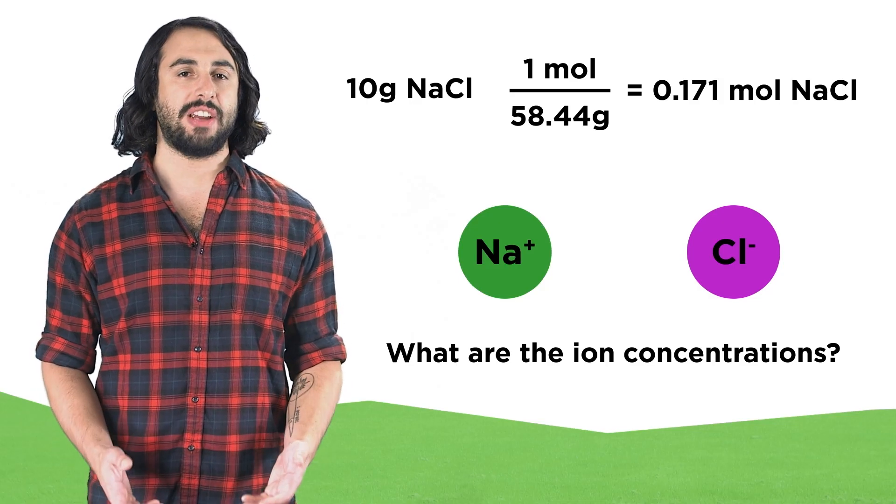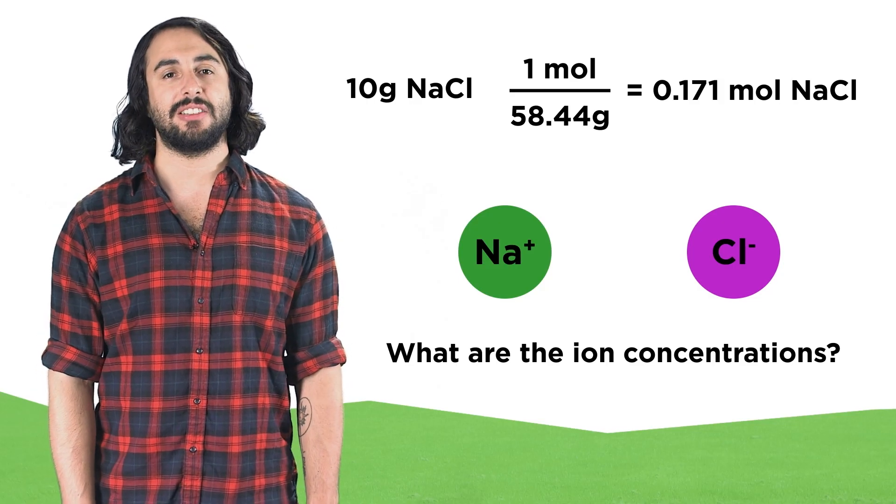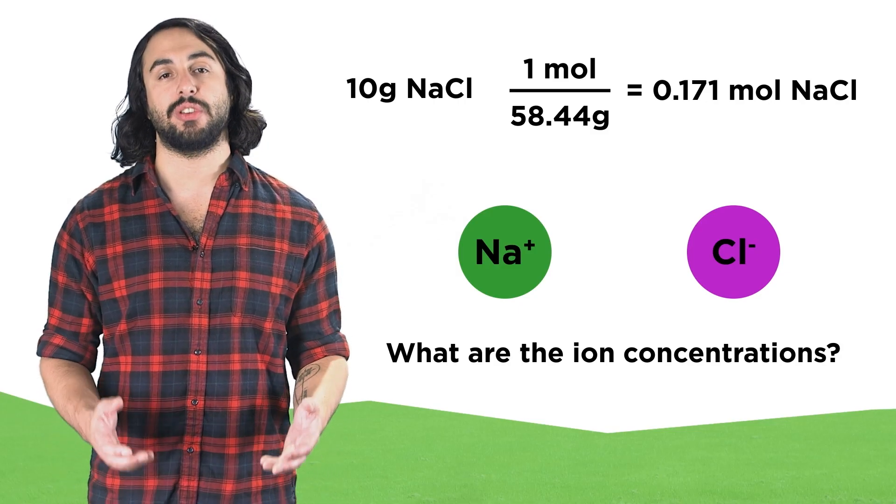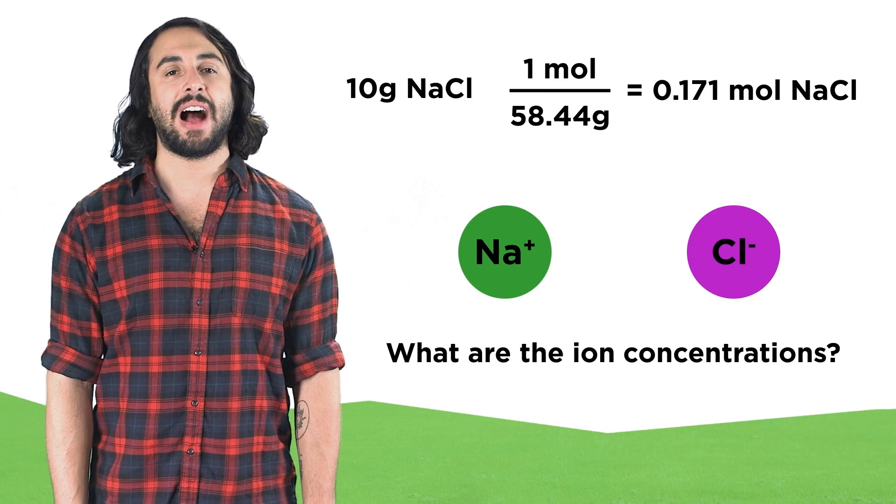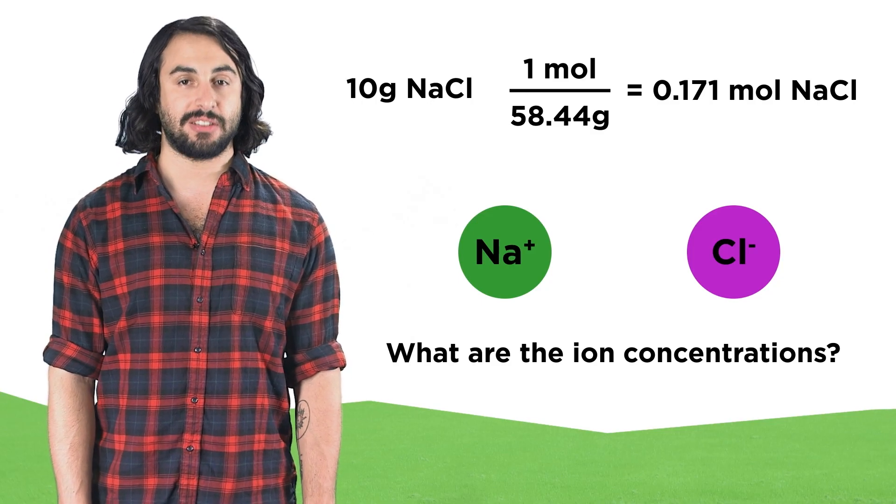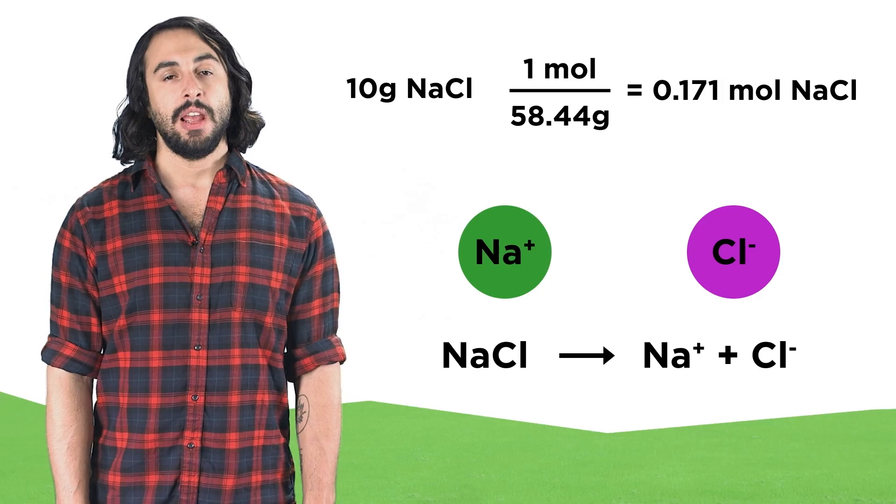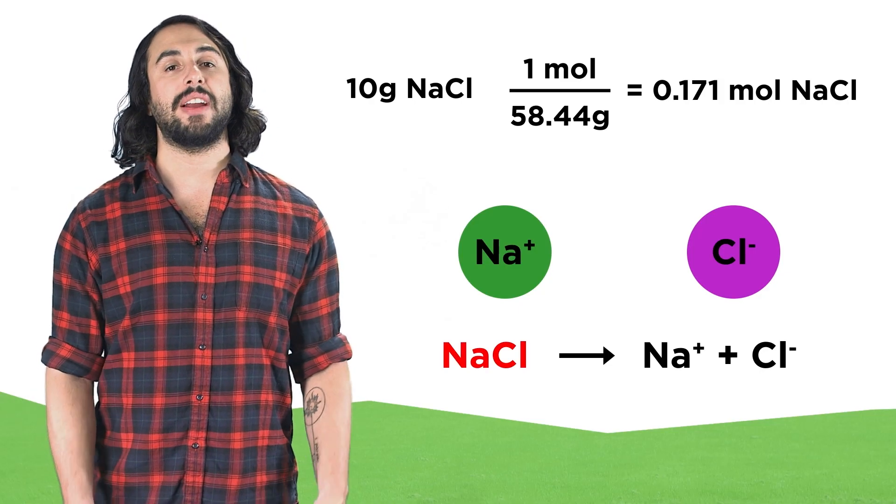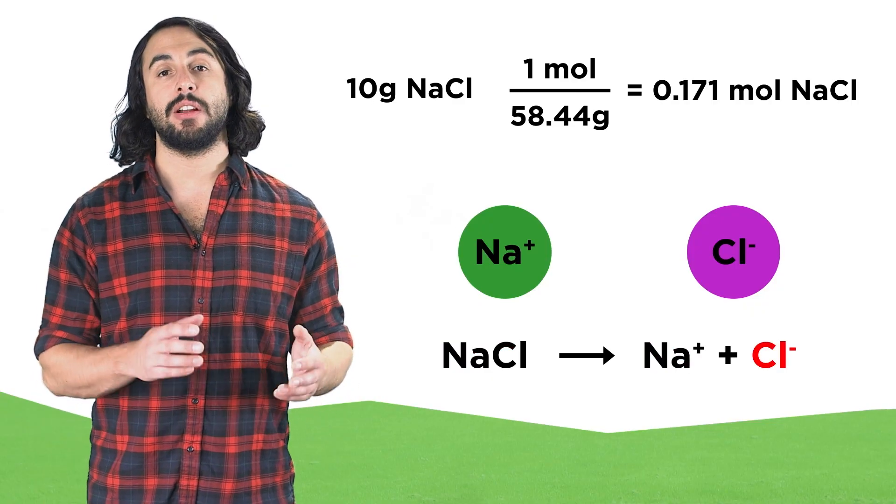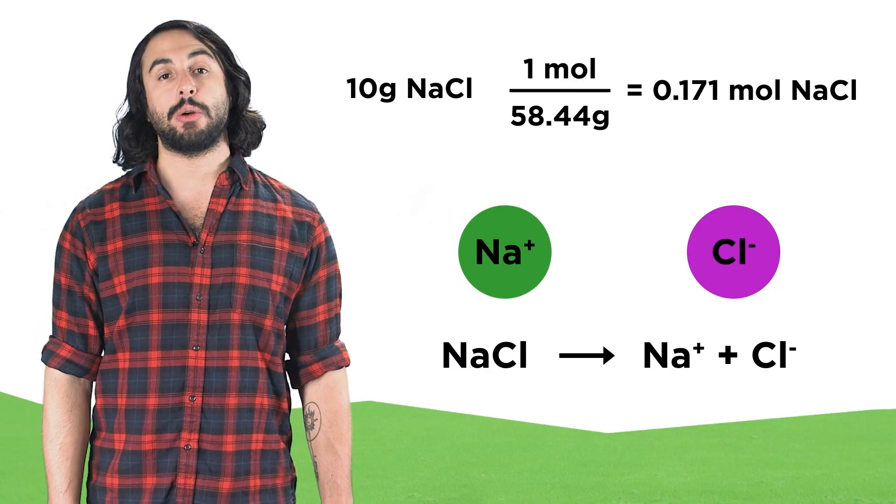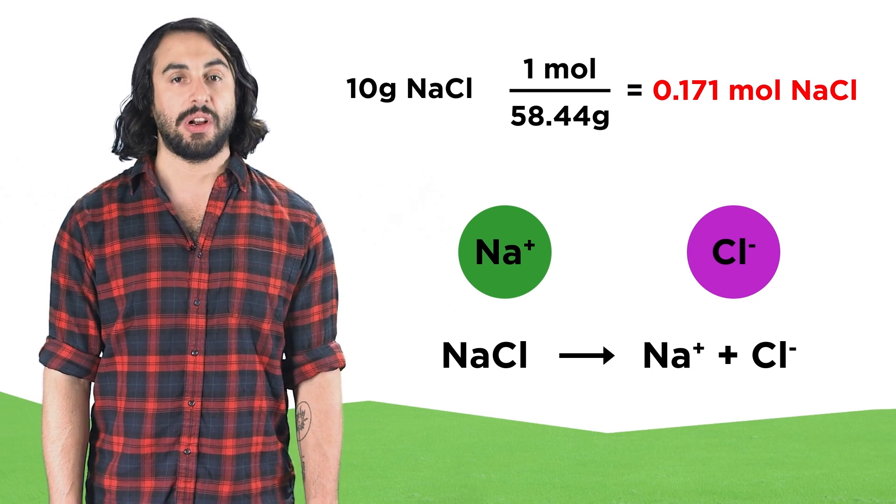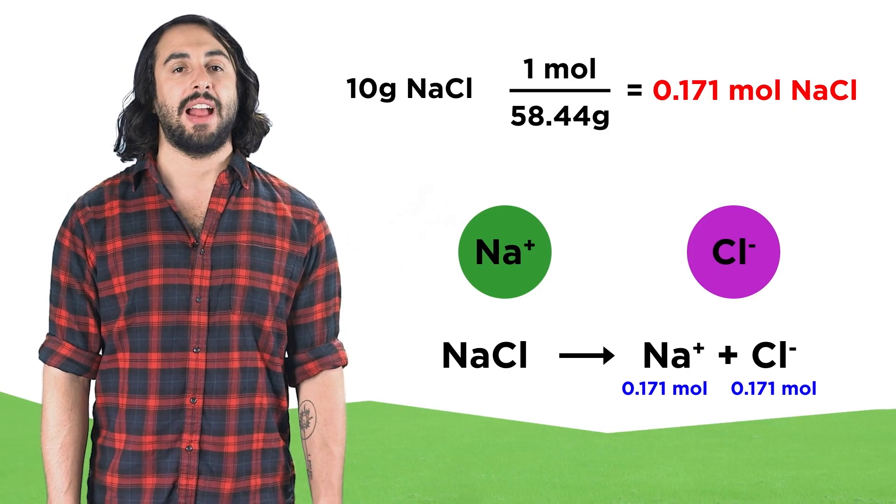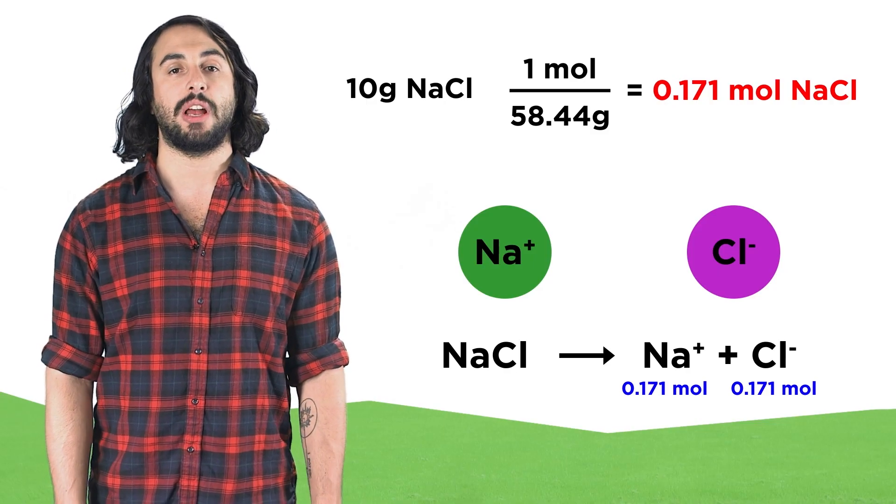What will be the concentration of the aqueous solution with respect to these two ions? We have to consult the molecular formula of the salt to see how many ions are produced for every formula unit that dissociates. In this case it's very simple. Each formula unit of sodium chloride generates one sodium ion and one chloride ion. So 0.171 moles of the salt, once dissociated, will produce 0.171 moles of sodium ions and 0.171 moles of chloride ions.